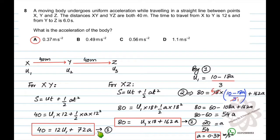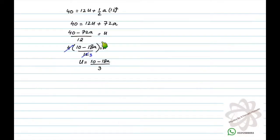By simplifying equation 1 you will get u1 equals 10 minus 18a upon 3. How? Let me tell you. 40 equals 12u plus half a times 12 squared. Then you simplify it this way to get u1 equals 10 minus 18a upon 3. This is simple maths.